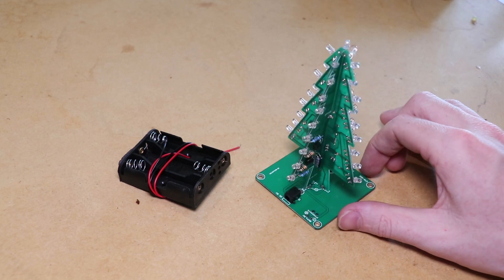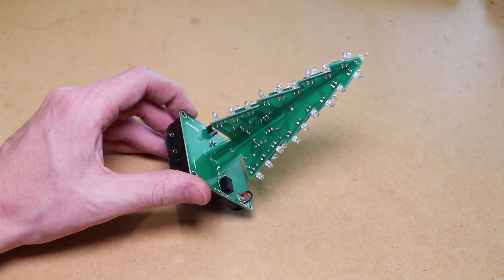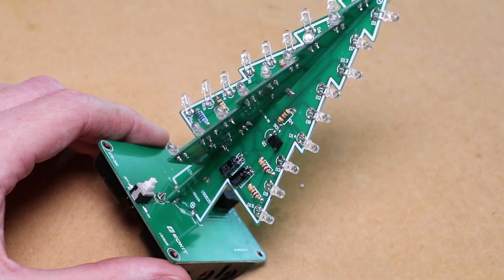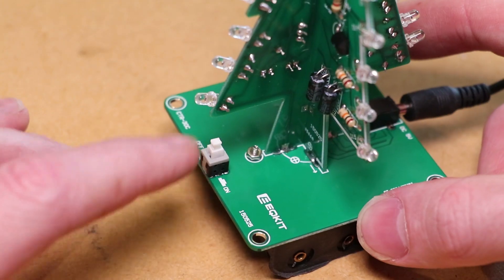It's now time to attach the battery pack to the base of the tree using the two bolts provided. We can then also solder the two wires to the board. Using the provided USB cable, I powered up the board and turned it on.